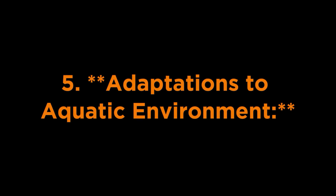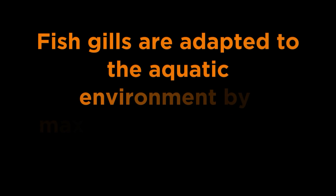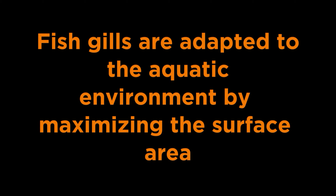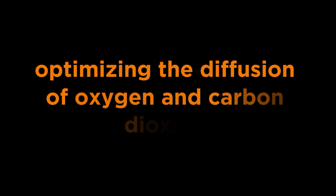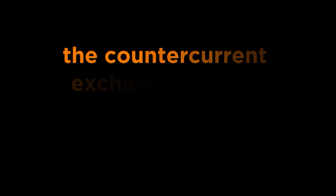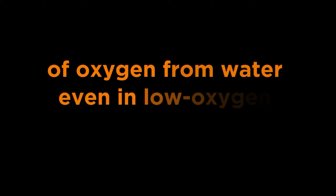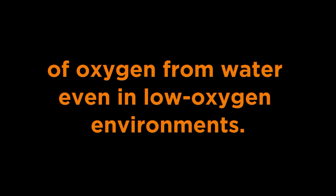Question 5 - Adaptations to aquatic environment: Explain how the structure and function of fish gills are adapted to the aquatic environment. Answer: Fish gills are adapted to the aquatic environment by maximizing the surface area available for gas exchange, optimizing the diffusion of oxygen and carbon dioxide, and minimizing resistance to water flow. Additionally, the countercurrent exchange system ensures efficient extraction of oxygen from water even in low oxygen environments.